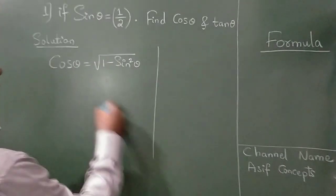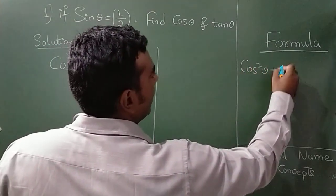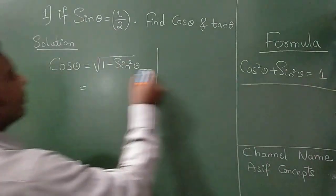There is a formula for cos theta. It is the square root of 1 minus sin square theta. You have studied in 10th standard this formula: sin square plus cos square is equal to 1.